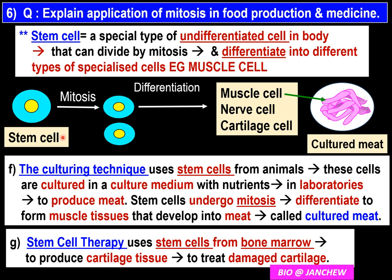Let us finish by discussing the application of mitosis in food production and medicine. For Form 4 students under the KSSM syllabus, this topic is important and included in the textbook and syllabus. For Form 5 students under KBSM, the culturing technique and stem cell therapy topics are not included, although Form 5 KSSM students will study stem cells in Chapter 5 Inheritance. Now, stem cells are used in the application of mitosis in food production and medicine.